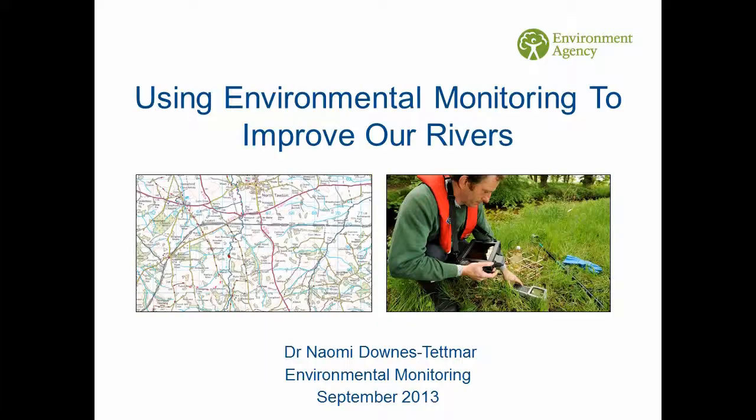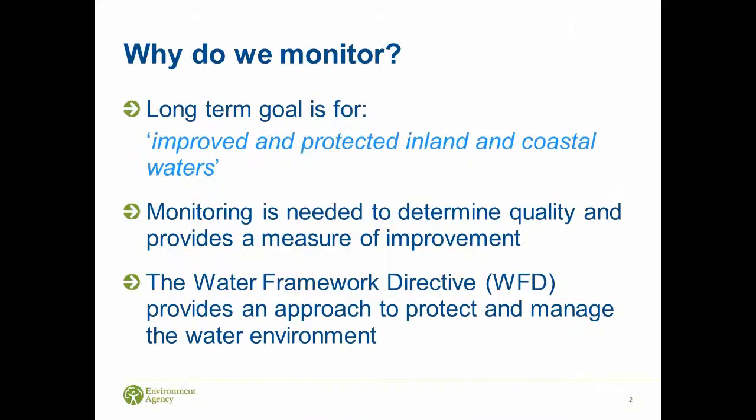The Environment Agency's main goal is to improve and protect inland and coastal waters, and the monitoring that we do enables us to get some way to achieving that goal. The monitoring enables us to determine the quality of the river environment and it provides a process of measures - if we monitor over a number of years we can compare that and see whether the rivers are actually improving or deteriorating as a result of pressures in the catchment or solutions to those pressures.